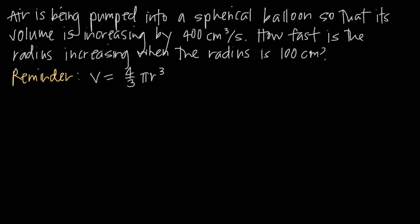With any related rates problem, you want to get a general sense of the information that you've been given. We've been given information about the volume and also about the radius. So what we want is a formula that relates the volume and the radius together. We know that the formula for the volume of a sphere is V = (4/3)πr³, where r is the radius. This is the equation that relates the volume to the radius, so this is the equation we want to use.